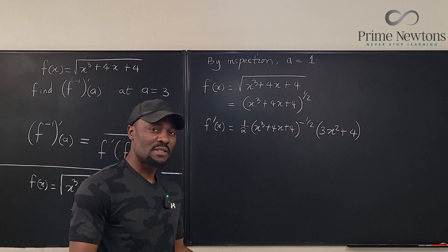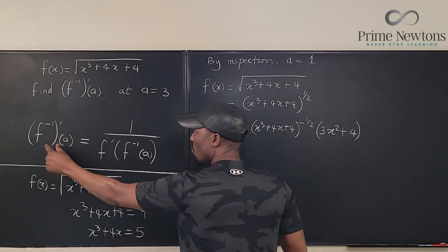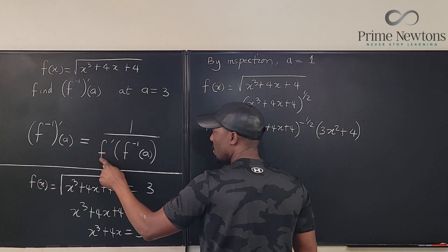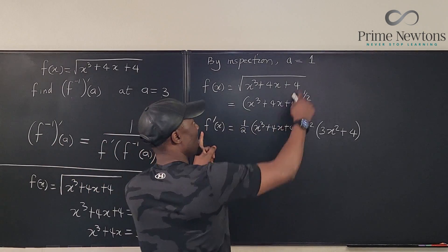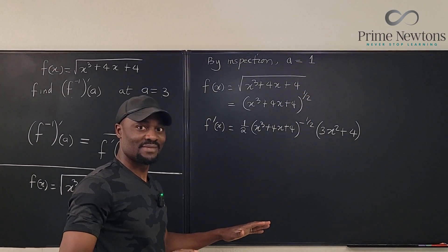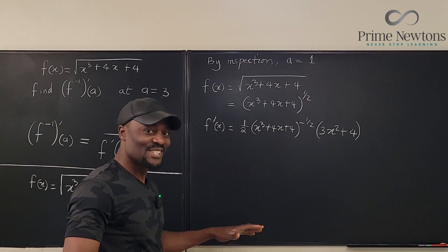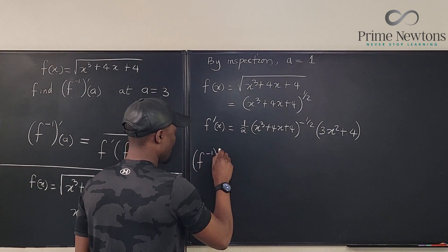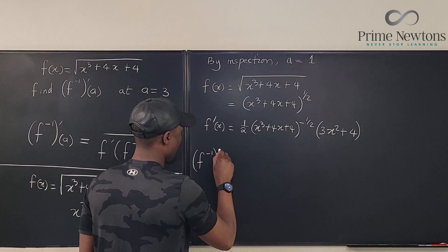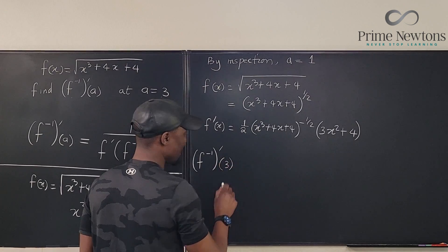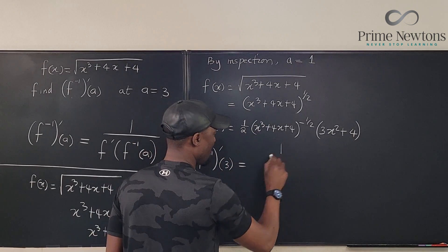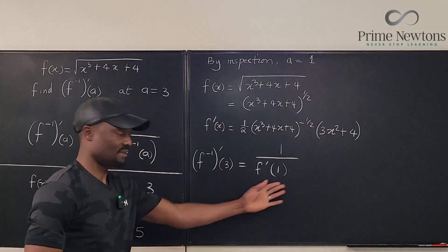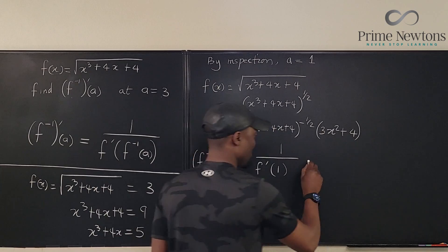So what is the formula that we have? What we're looking for, the derivative evaluated at this point is 1 over this derivative evaluated at this point. So we know that the derivative of f inverse at 3 is basically 1 over f prime evaluated at 1. That's it.